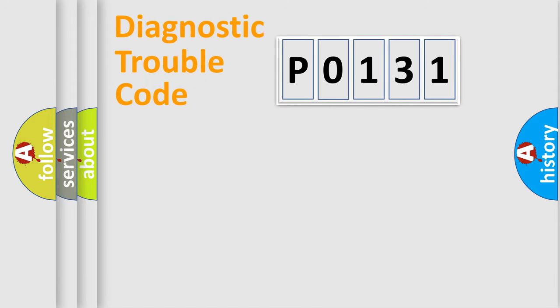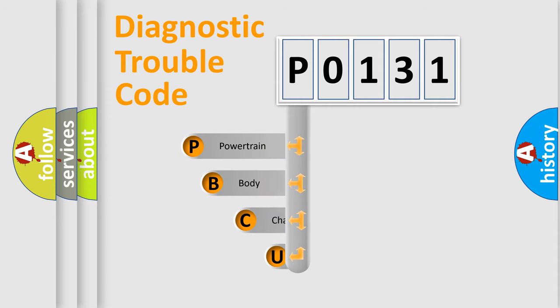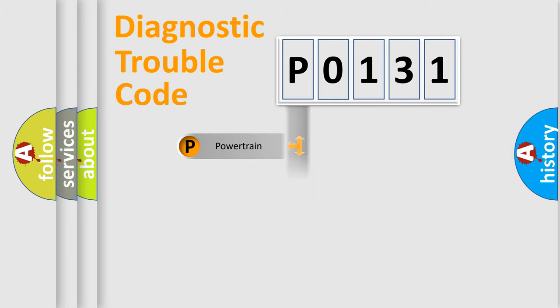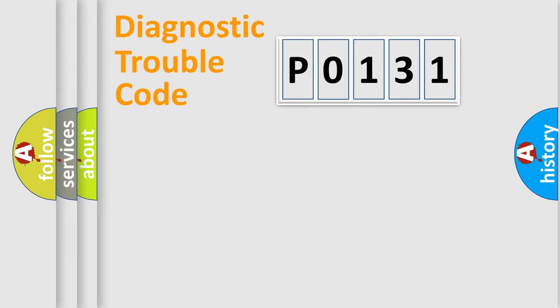Let's do this. First, let's look at the history of diagnostic fault code composition according to the OBD2 protocol, which is unified for all automakers since 2000. We divide the electric system of the automobile into four basic units: Powertrain, Body, Chassis, and Network.